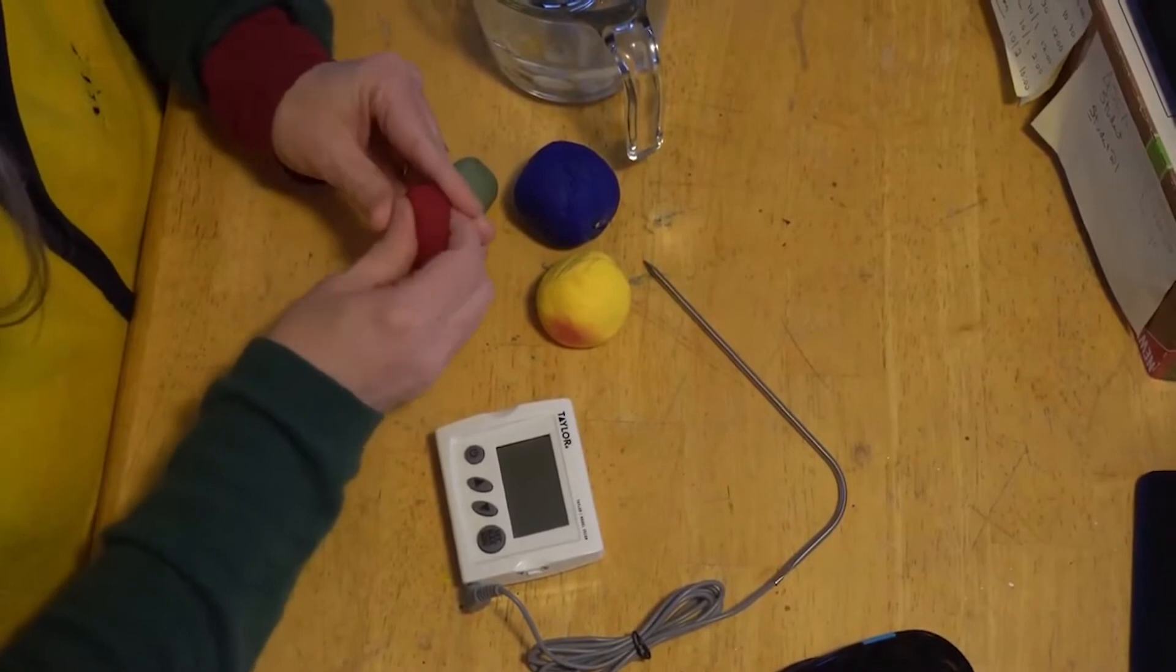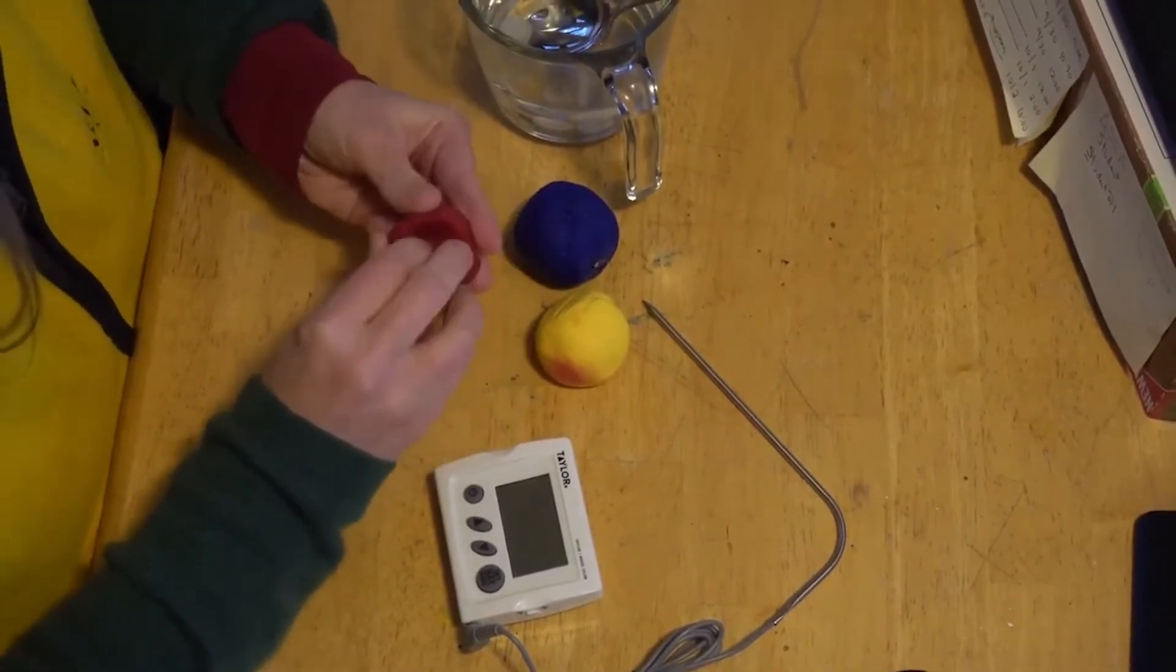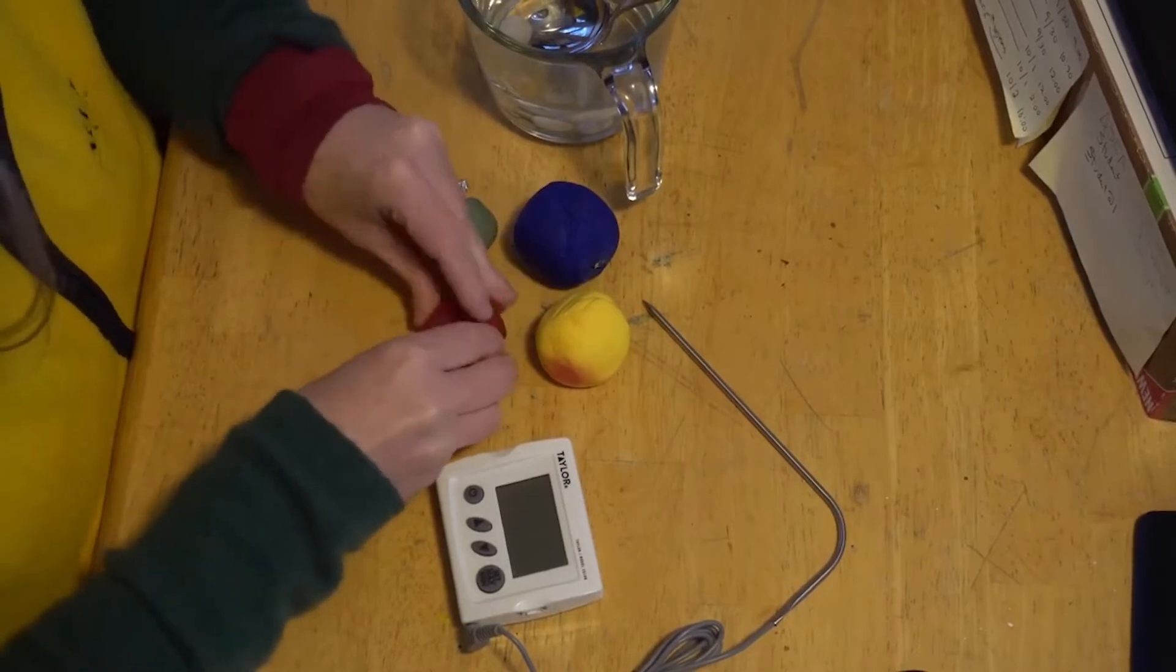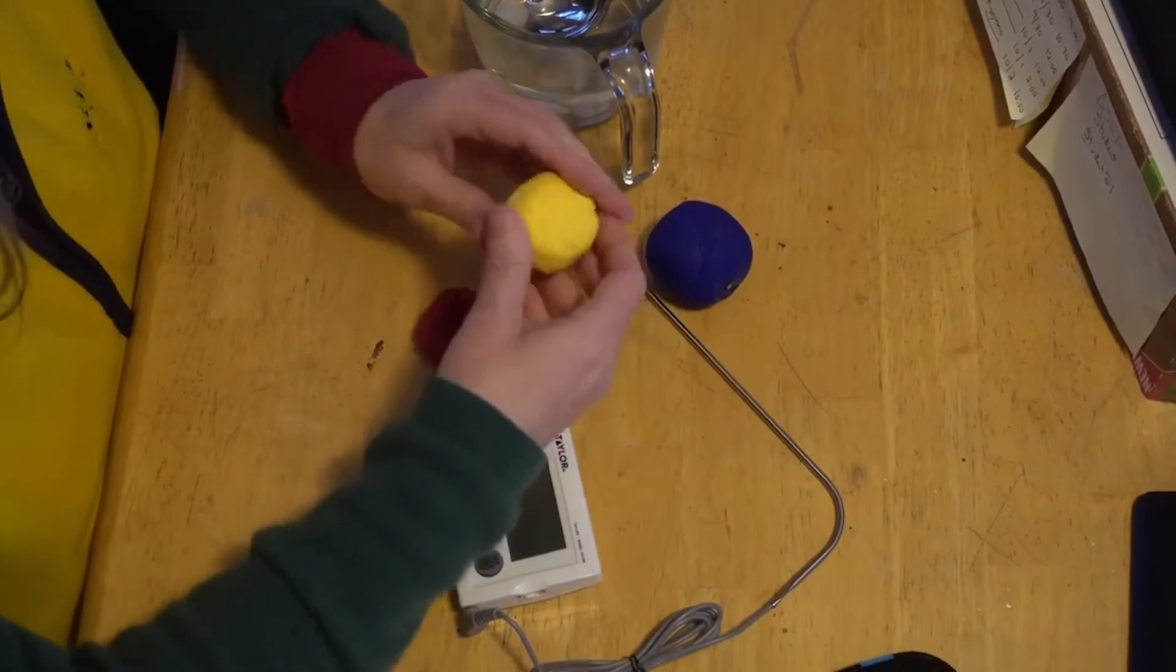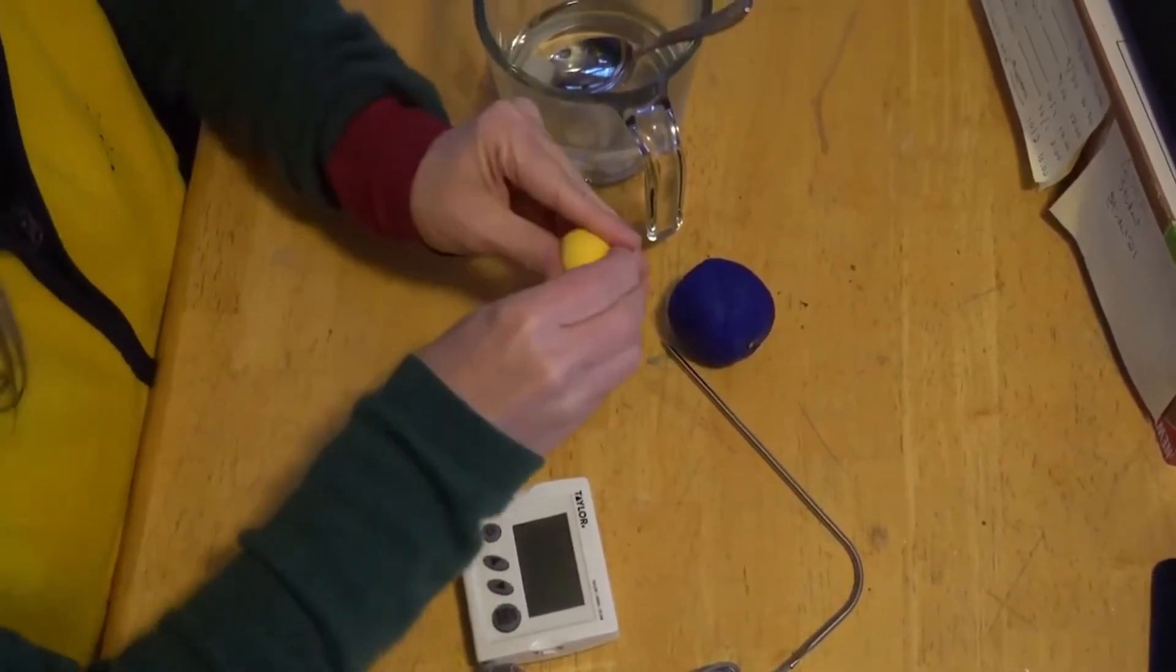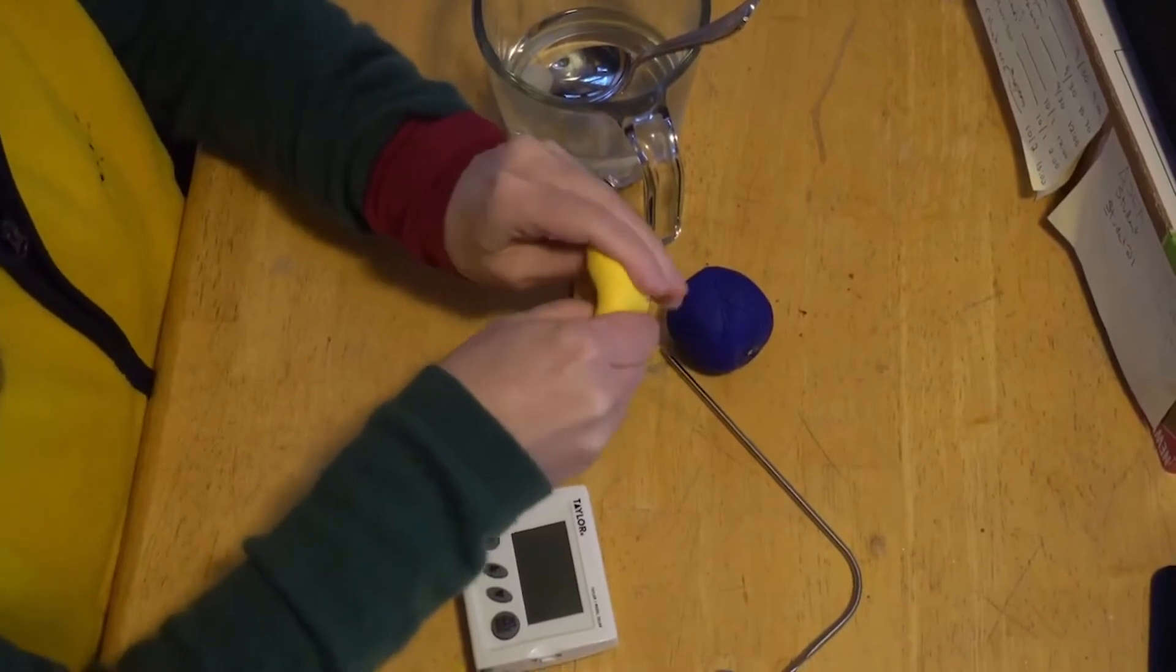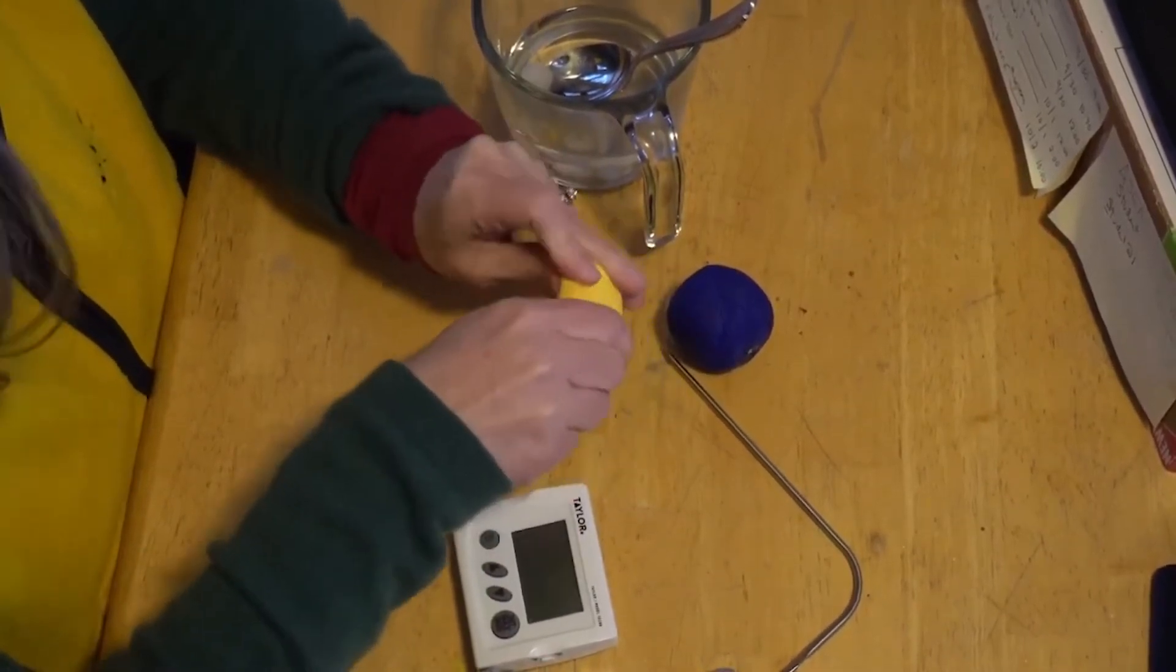Red is the Earth's core and we are going to flatten this out a little bit and we will put a hot rock in there when that comes out. The next layer of the Earth's core is this yellow and so we are going to wrap this around the red core of the Earth.